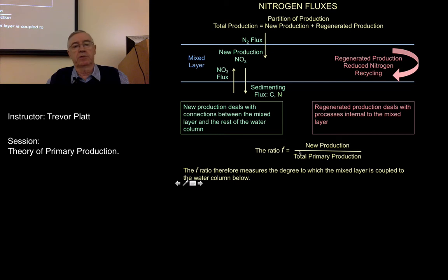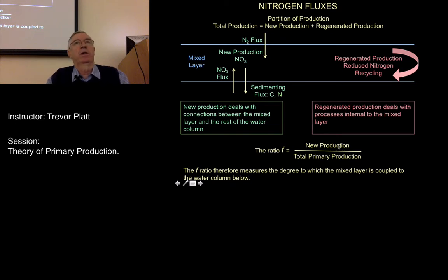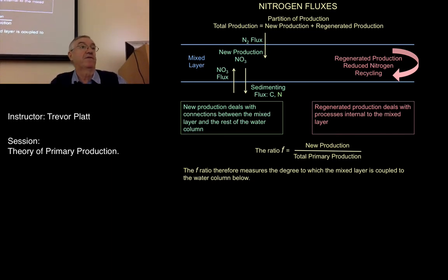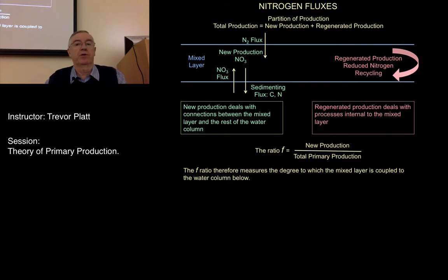People use something called the F-ratio — the ratio of new production to total production. Using the yardstick figures of 16 gigatons out of 50, that's roughly a third, which would imply an F-ratio of approximately 0.3.